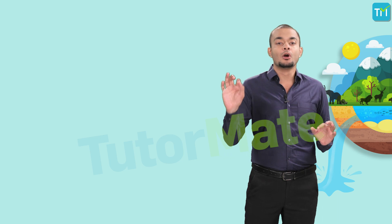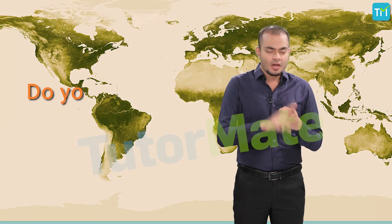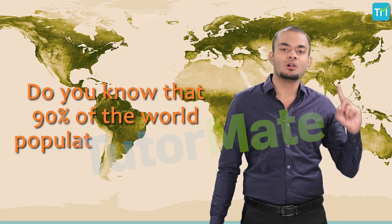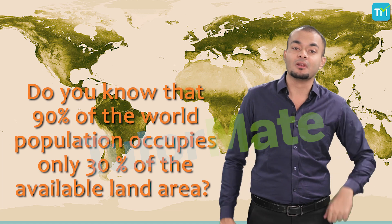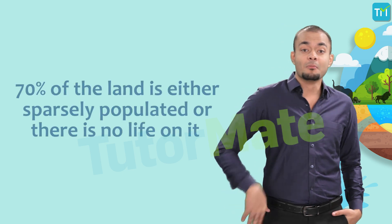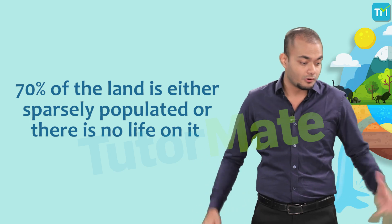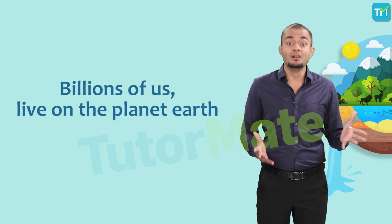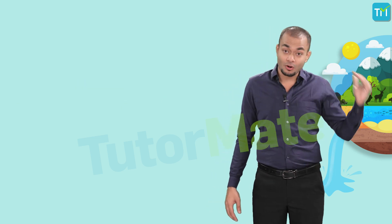We shall understand these natural resources one by one, beginning with land. Here is something interesting and surprising — did you know that 90% of the world population occupies only 30% of the available land area? The remaining 70% of land is either sparsely populated or there is no life on it whatsoever. It may sound unbelievable given that billions of us live on planet Earth, but it is surprisingly true.